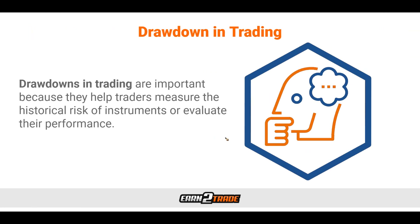Drawdowns in trading are important because they help us measure the historical risk of instruments or evaluate their overall performance. For example, the drawdown of an ETF, futures contract, or stock can indicate how risky and volatile the instrument has been in the past, so traders can better identify whether the particular instrument fits their risk tolerance and investment goals. In the context of trading, drawdown can also be described as downside volatility. When analyzing drawdown, it is important to note that the time it takes to recover from the drop is another key characteristic to pay attention to.